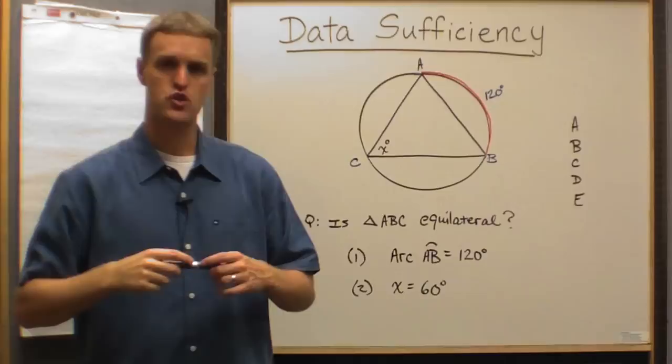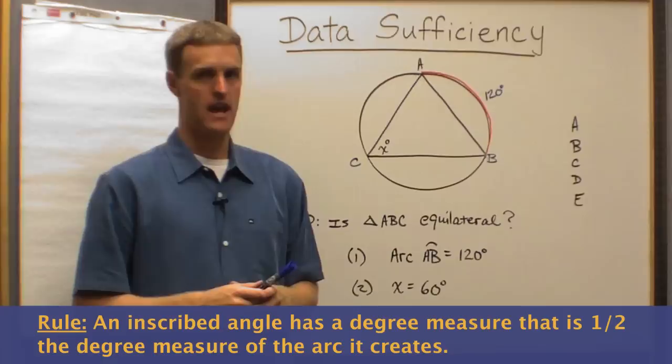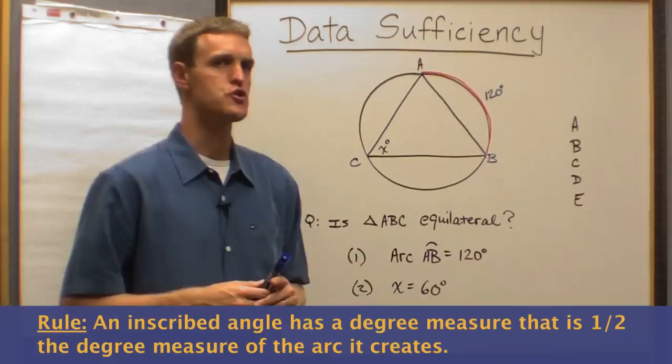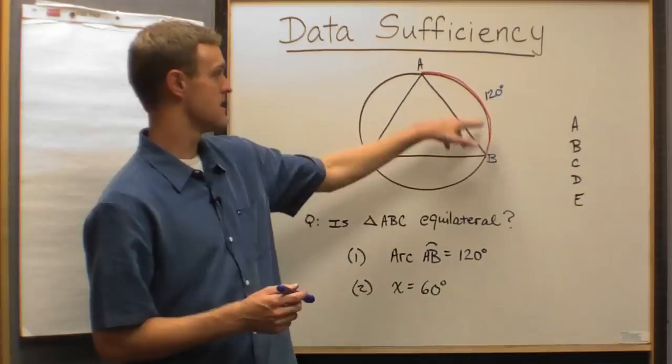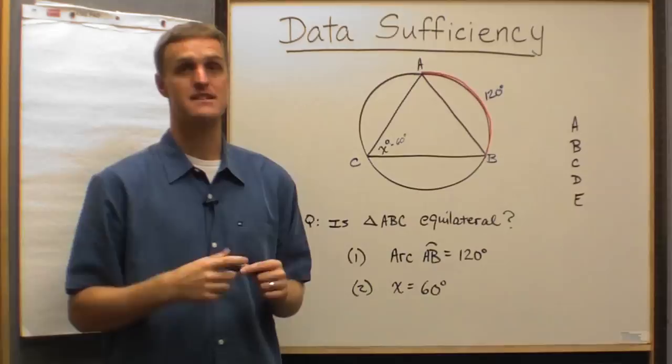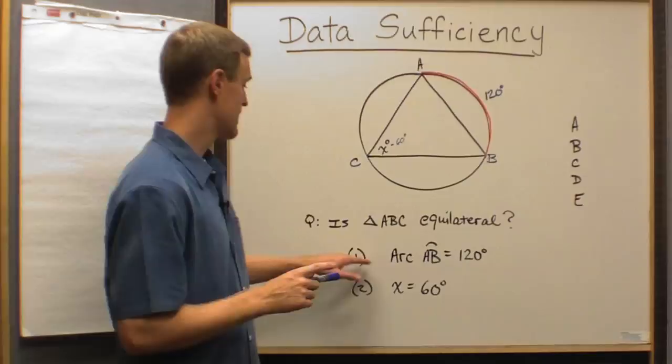Now here's a rule for you. Angle ACB is what is called an inscribed angle. That may be a term you haven't heard since 10th grade geometry. An inscribed angle has a degree measure that's one half as big as the degree of the arc it creates. In other words, if statement one tells us that arc AB is 120 degrees, I immediately know that X is 60 degrees, period. I know that before I even look at statement number two.